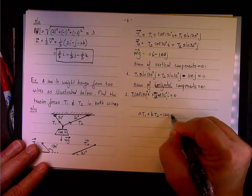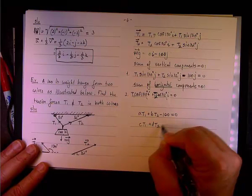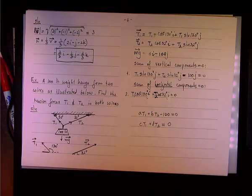And basically, what you have is a system that looks like this: A T1 plus B T2 minus 100 equals 0, and C T1 plus D T2 equals 0, and you solve for T1 and T2.